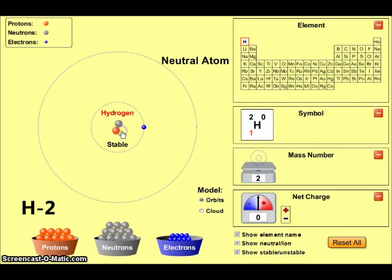If I add a neutron, I still have hydrogen because there's still one proton in the nucleus, but now by adding that neutron, I've increased the mass to two atomic mass units, so we would call this the H2 isotope of hydrogen. It's also sometimes called deuterium.